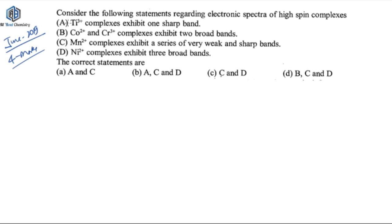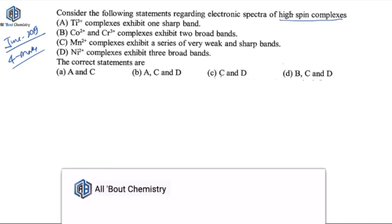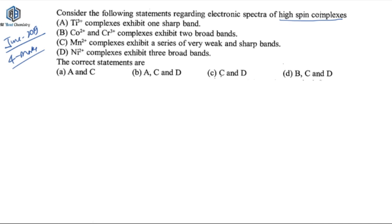The question says: consider the following statements regarding electronic spectra of high spin complexes. Remember, the Orgel diagram concept is only applicable for high spin complexes, so they have made it clear you have to solve this for high spin complexes. That means you can apply the Orgel diagram here. Two things to keep in mind: first the number of transitions, and second the type of transition — what kind of band you are going to get.